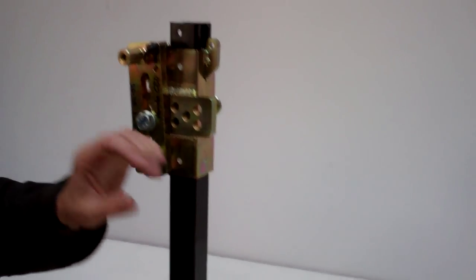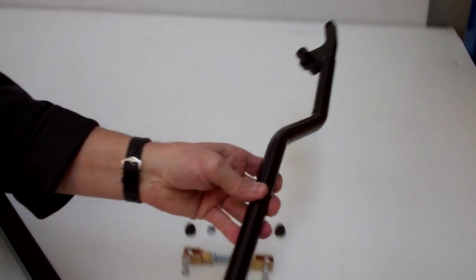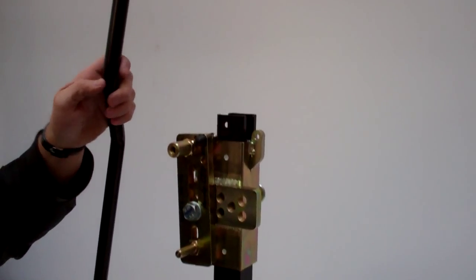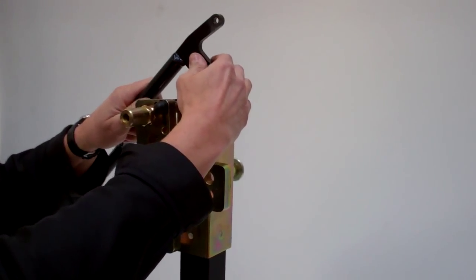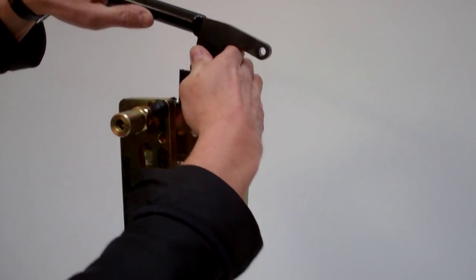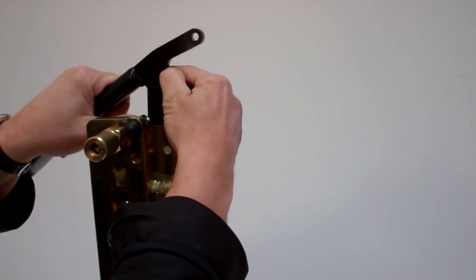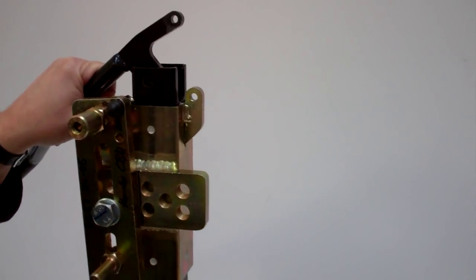We start by taking the handle and placing it on the top opening of the Burr's Extent, lining up the holes.